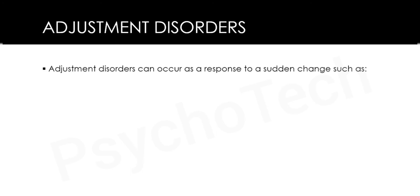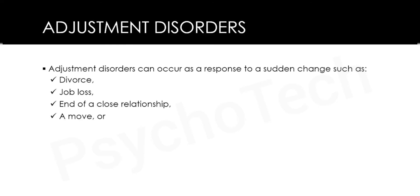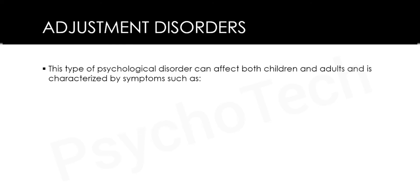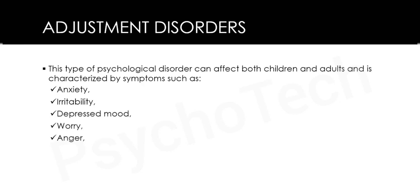The next type is adjustment disorders, which can occur as a response to a sudden change such as divorce, job loss, end of a close relationship, a move, or some other loss or disappointment. This disorder can affect both children and adults and is characterized by symptoms such as anxiety, irritability, depressed mood, worry, anger, hopelessness, and feelings of isolation.